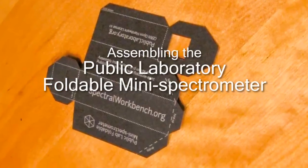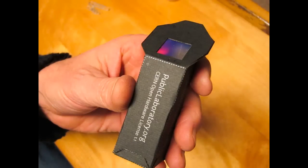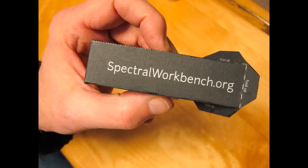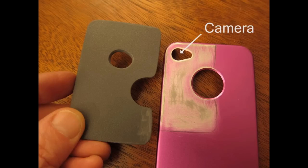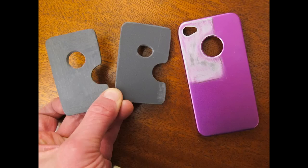I built two versions of the Public Laboratory's fold-up spectrometer for smartphones and tried two slightly different ways of attaching them to iPhones. I bought a couple of these rigid aluminum iPhone cases for four dollars apiece, and because the iPhone's camera is in the corner of the phone, I made plastic plates to extend the surface for mounting the spectrometer.